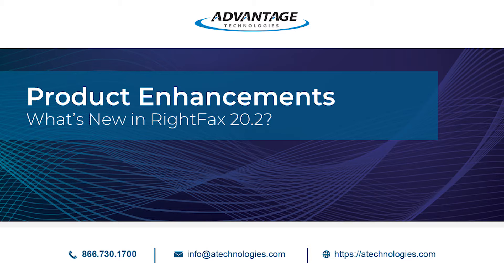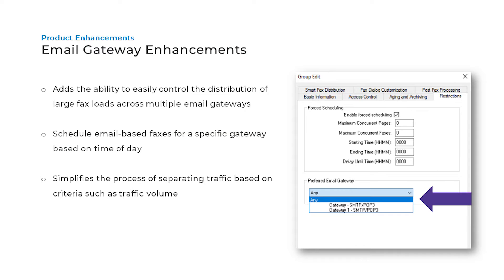Now let's discuss product enhancements in RightFax 20.2. RightFax 20.2 has added the ability to create a preferred gateway, so now you can control the distribution of large fax loads across multiple gateways and schedule email-based faxes to specific gateways based on the time of day. As you can see from the slide, it's pretty easy to set up and you can define as many preferred gateways as you like.